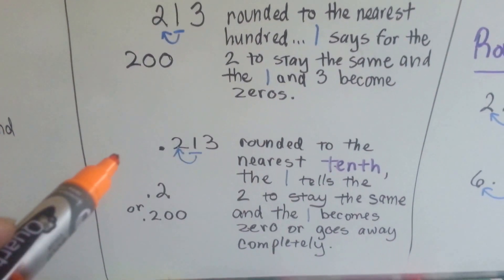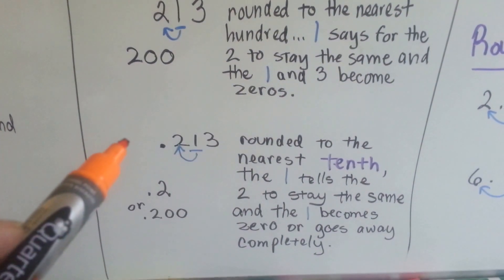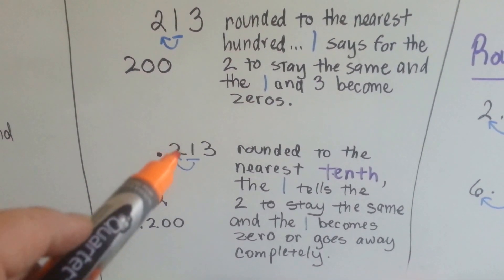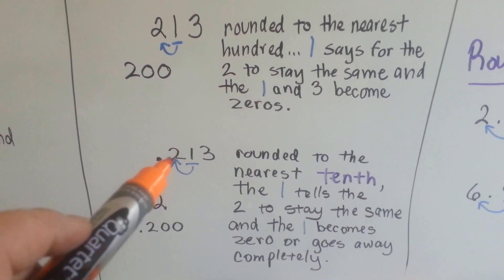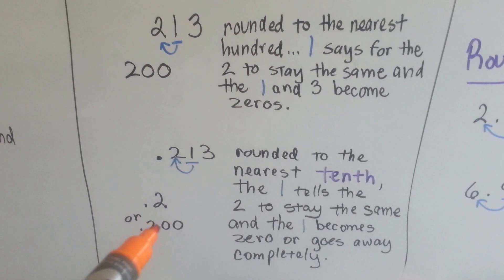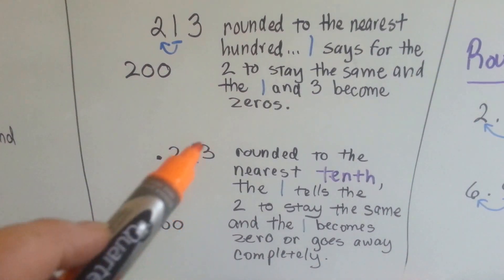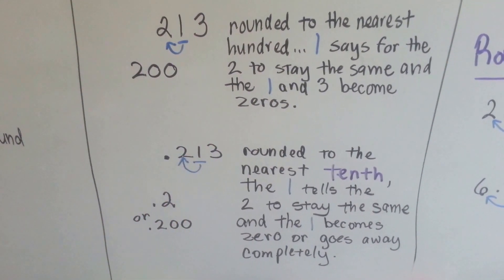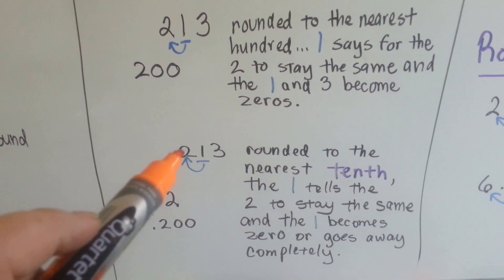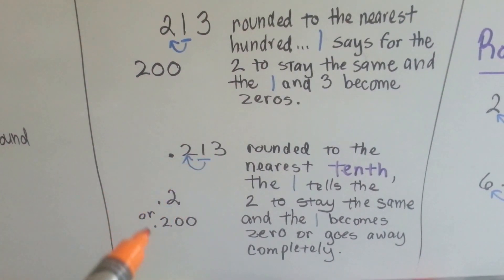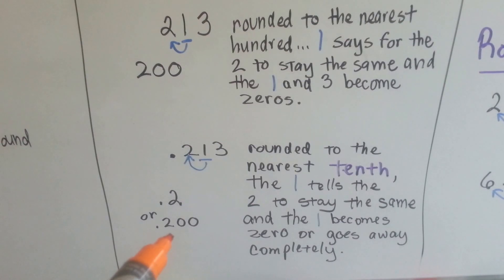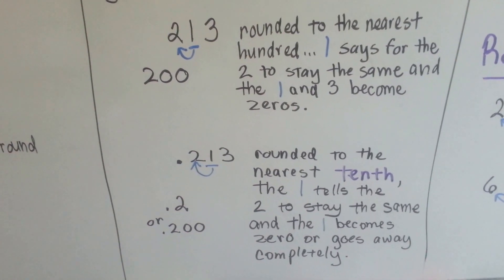Same thing in decimals. If we're rounding to the nearest tenth place, the one tells the two to stay the same and then it becomes a zero and the three becomes a zero, or it just falls completely off. Two hundred and thirteen thousandths rounds to the nearest tenth as two tenths — or two hundred thousandths. Either way is acceptable.